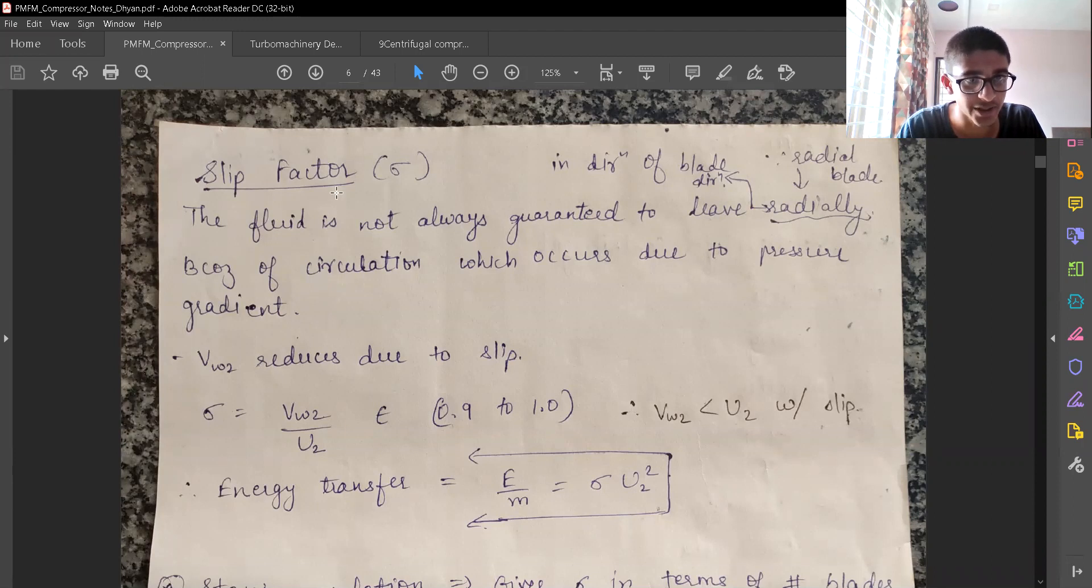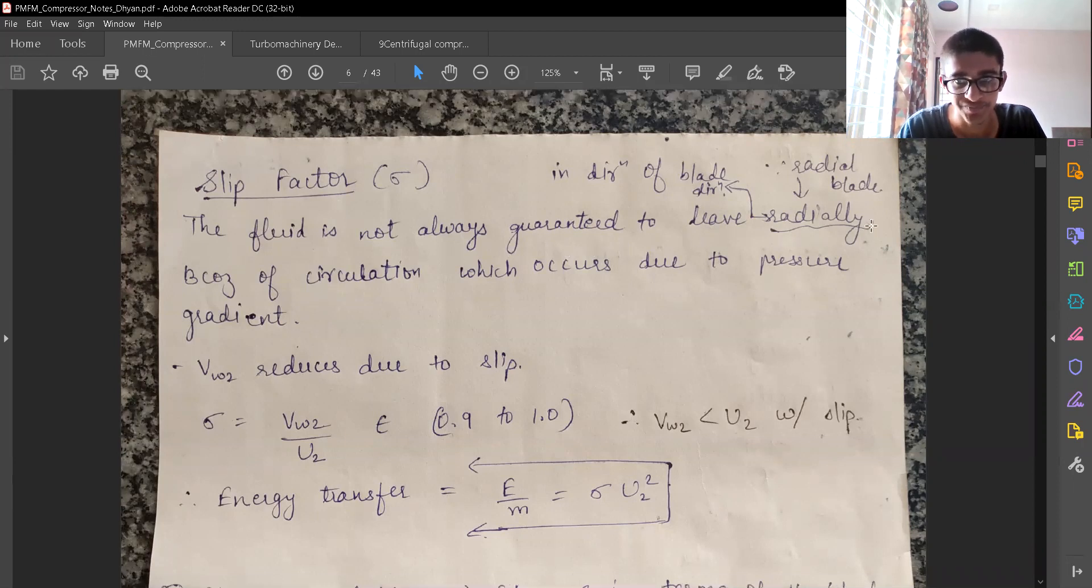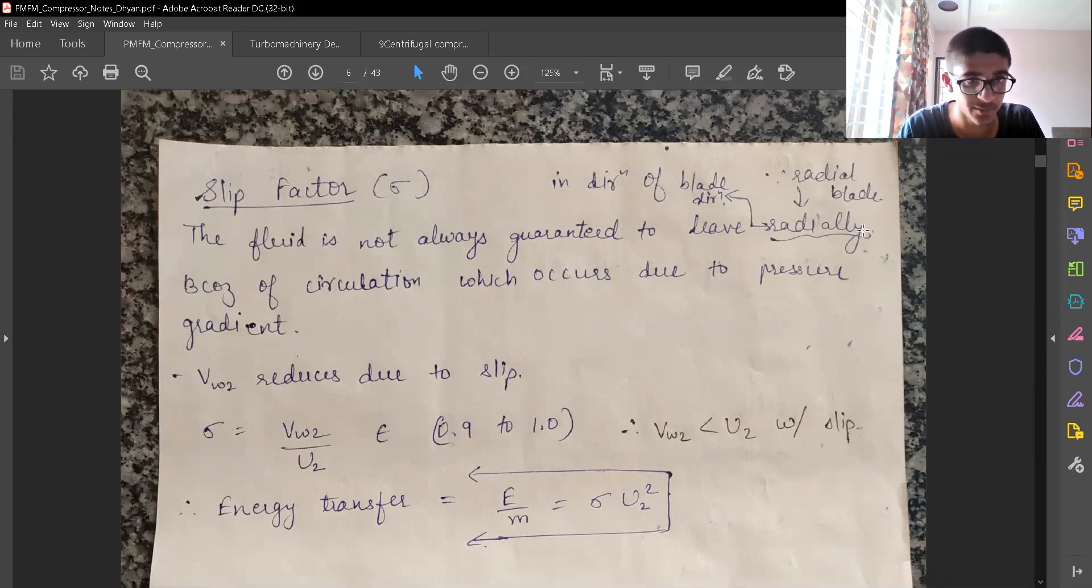First we have a slip factor, that is some slip loss. What is this? The fluid is not always guaranteed to leave radially, even though we have radial blades. This is because of circulation which occurs due to pressure gradient.